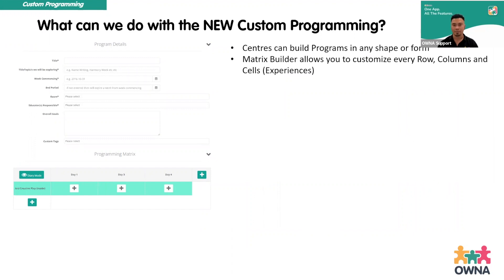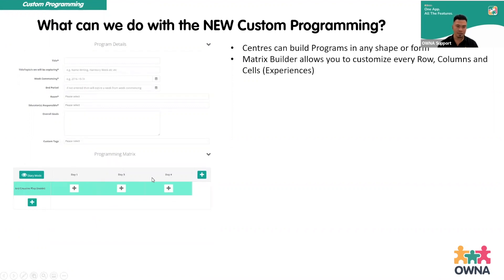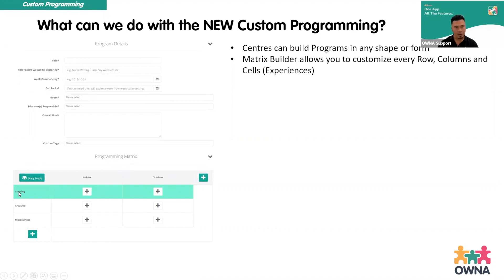The key part of the new template is called the matrix builder. This section creates your ability to build different rows and columns, and each one of these boxes called experiences you can customize as well. You can have different days, or indoor and outdoor — each row is still called a category. We've removed the limitation of the old design where you had to pick different categories, because it was limiting. Now you can add multiple categories of the same type, so you could put 'cooking' in twice and have different experiences for both.